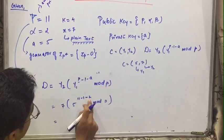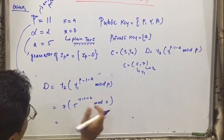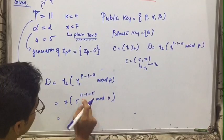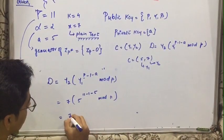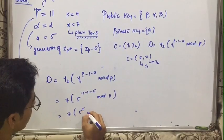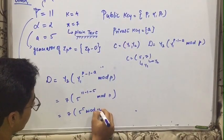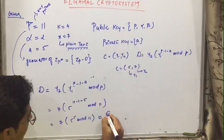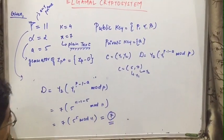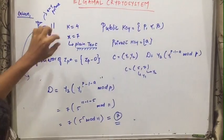So 10 minus, 10 minus 2 that is, sorry a is 5. So 11 minus 1 that is 10 and 10 minus 5 is 5. So 7 into 5 raise to 5 mod 11. So it will be something about, the answer will be, so this was the decryption of the original message we have sent that was 7.